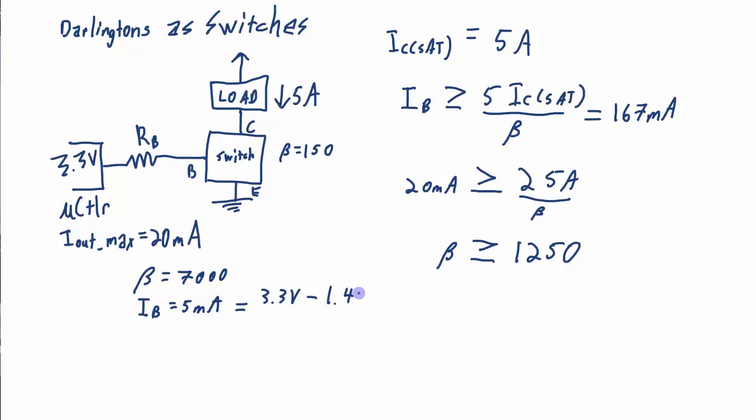So those two base emitter junctions are going to give me about 1.4 volts, maybe 1.2 volts. But let's use 1.4 volts here. So I'll have 3.3 minus 1.4 volts over RB. That means my RB needs to be 380 ohms.